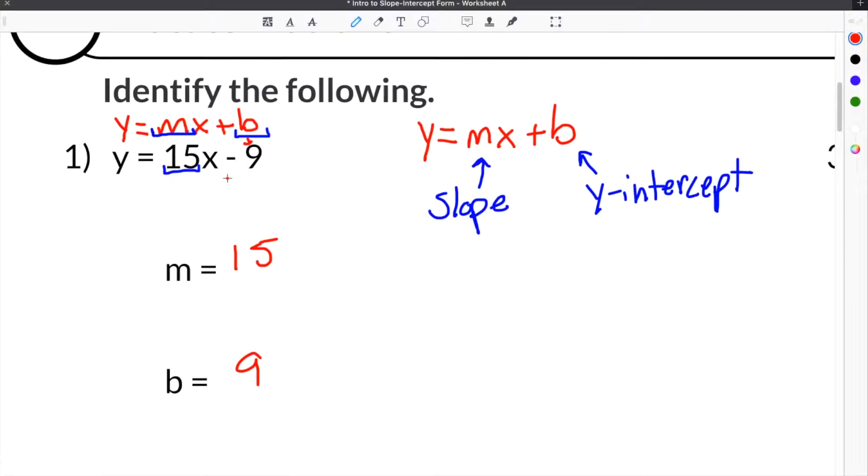If we look back at our problem, we have 15X minus 9. So this minus here has to be included anytime you have a negative number. So the Y-intercept is really going to be negative 9.